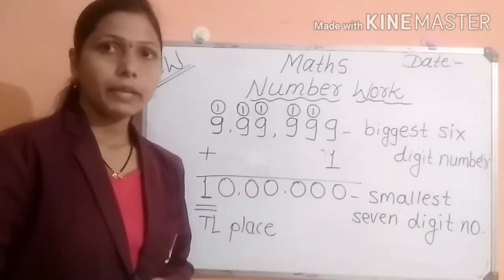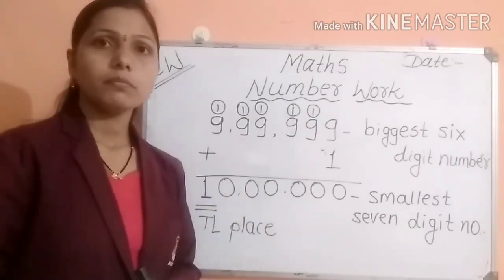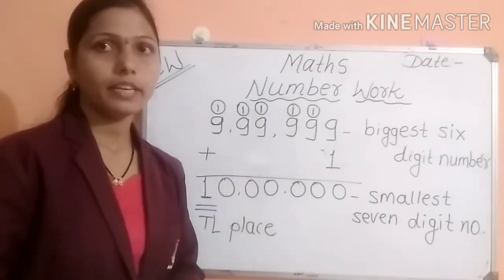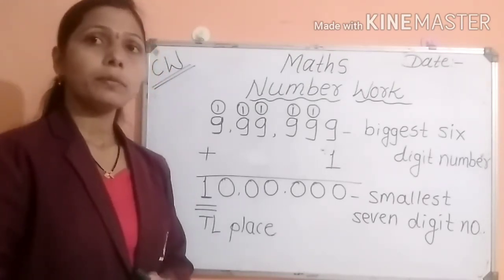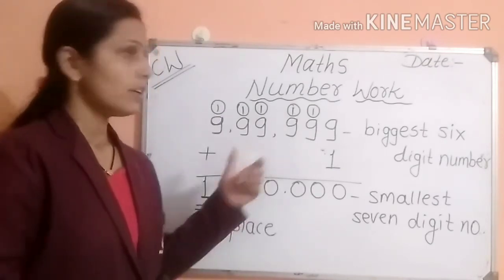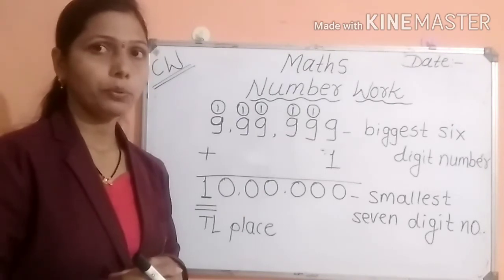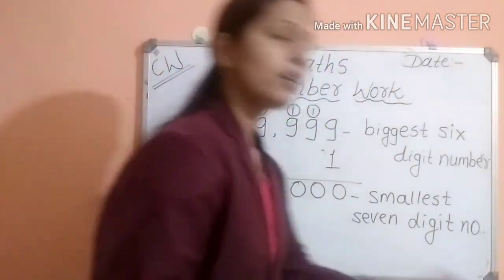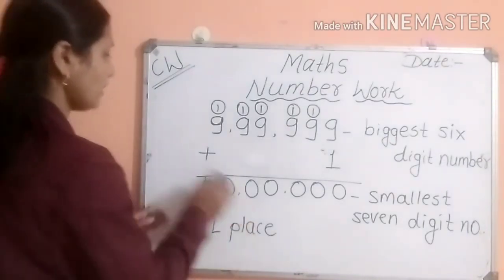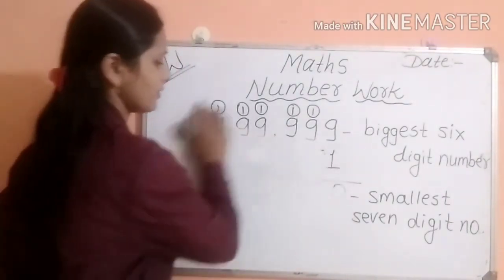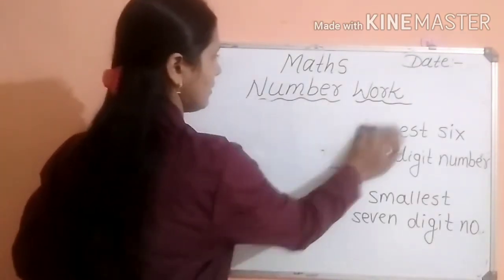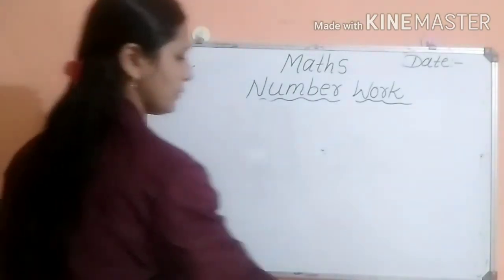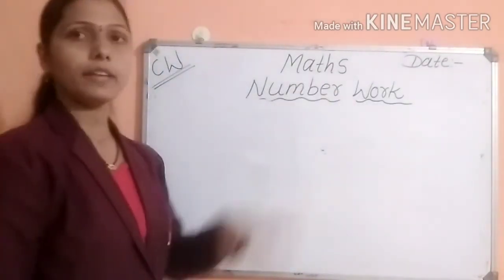You can note this down also: nine lakh ninety-nine thousand nine hundred ninety-nine is the biggest six-digit number, and when we add one more to it, we get the smallest seven-digit number — that is ten lakh. Now we have to read the number and write it in words. Students, be ready with your pen and your notebook.